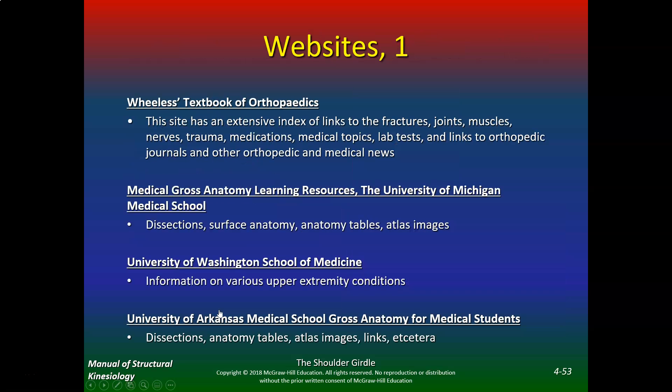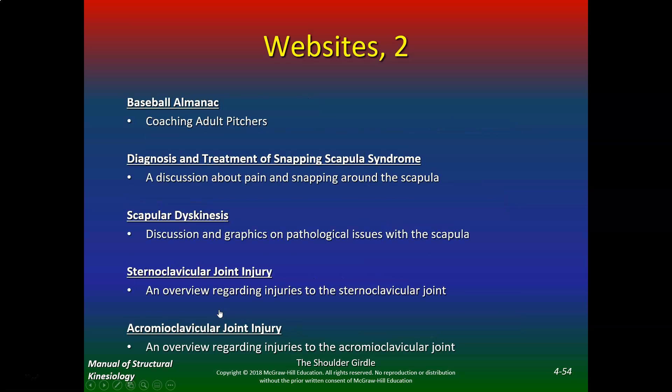Here are some useful resources: Wheeler's Textbook of Orthopedics is a good one, as well as Baseball Almanac. These are good websites to look at. Topics covered include diagnosis and treatment of snapping scapula, sternoclavicular joint injuries, and AC joint injuries.